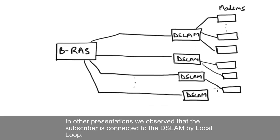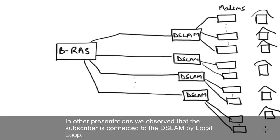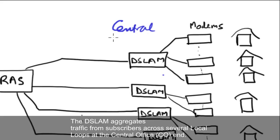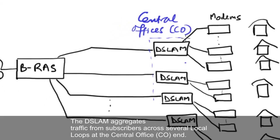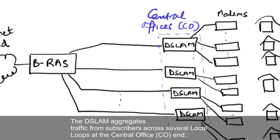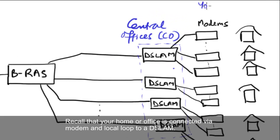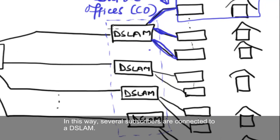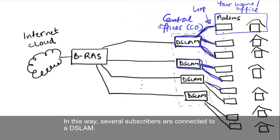In other presentations, we observed that the subscriber is connected to the DSLAM by local loop. The DSLAM aggregates traffic from subscribers across several local loops at the central office end. Recall that your home or office is connected via modem and local loop to a DSLAM. In this way, several subscribers are connected to a DSLAM.